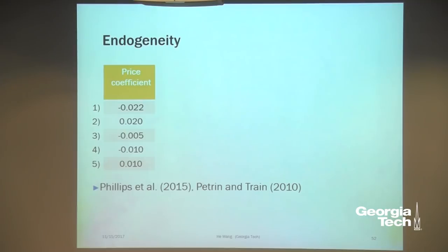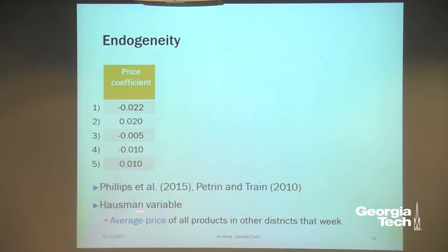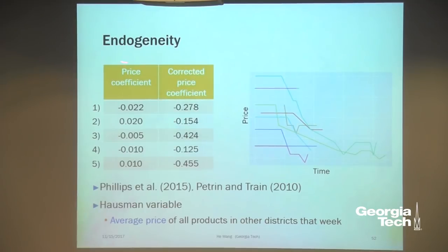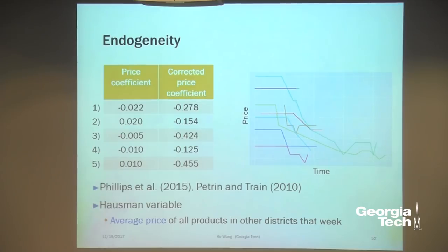We use a standard econometric method to correct for the endogeneity effect — specifically a Hausman variable. After correcting, the coefficient estimates now make more sense: they're all negative. For example, a coefficient of -0.4 means if we increase price by $1, the weekly sale for that unit will decrease by 0.4 on average. This is the estimation step: we take three years of data, build a model, and then test different algorithms via simulation.